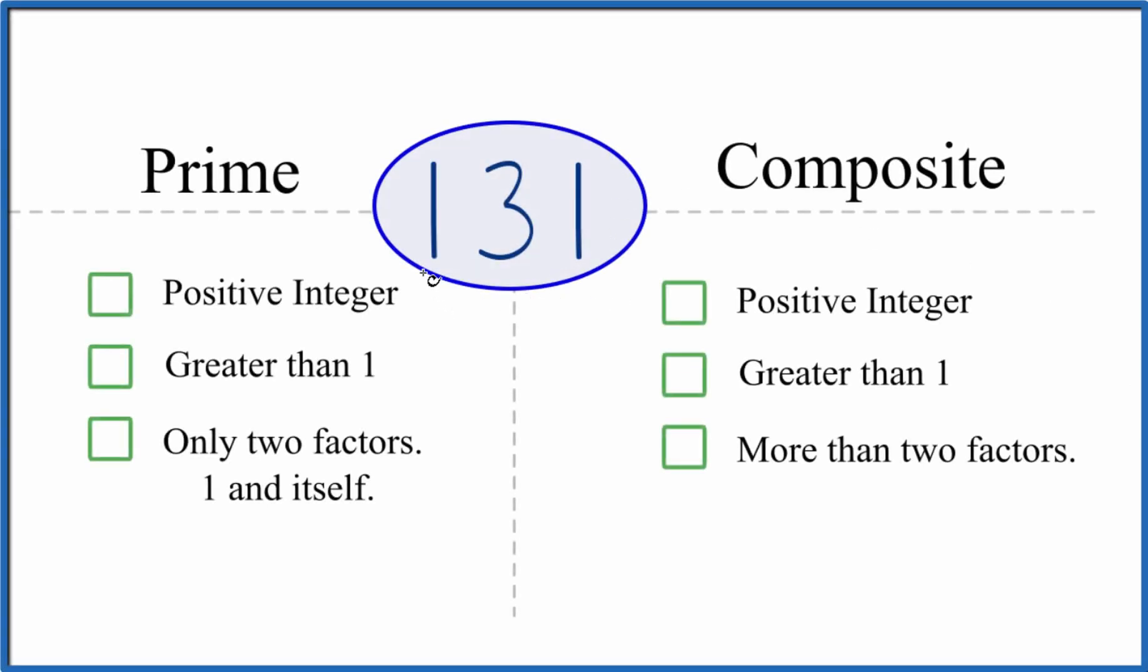If you're trying to figure out whether 131 is prime or composite, here's how you can do that. Let's look first at whether 131 is a prime number. We ask, is it a positive integer? Yes, it's positive, it's a whole number. Is it greater than one? It's greater than one. And are there only two factors, one and 131, that go evenly into 131?